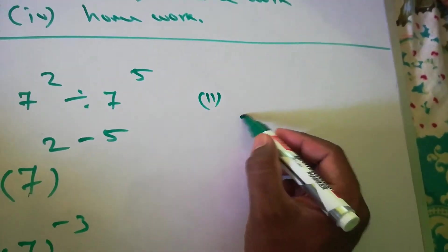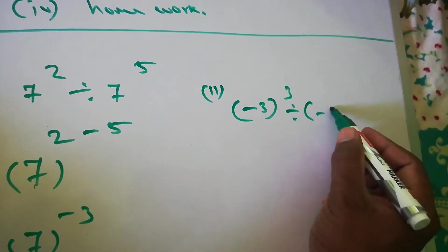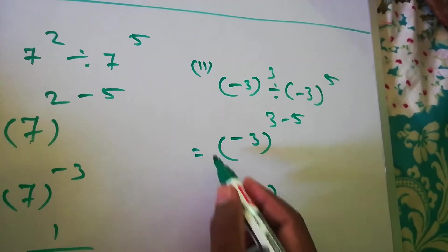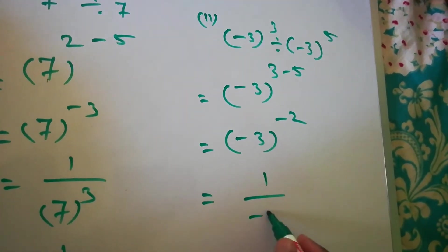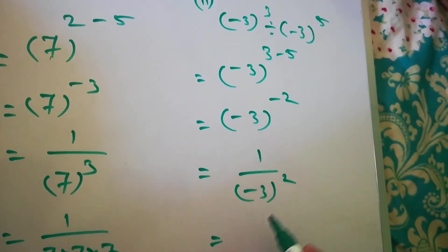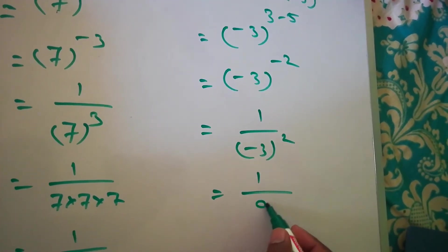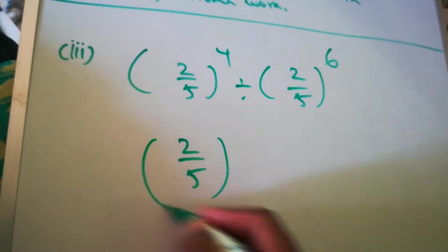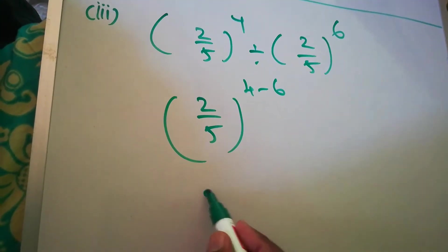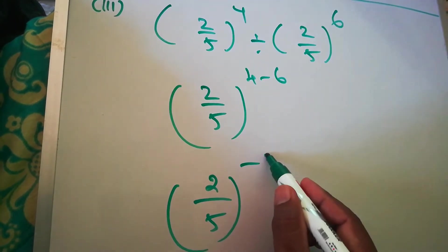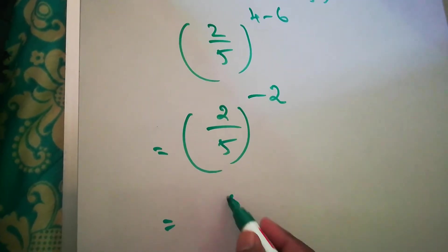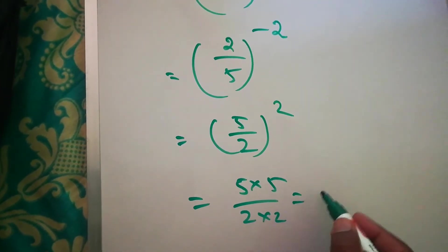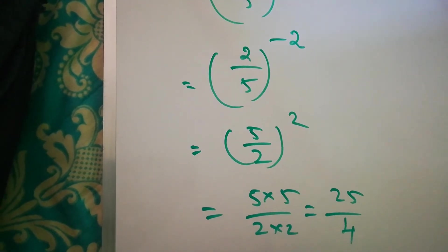Second question: (-3)^3 divided by (-3)^5 = (-3)^(3−5) = (-3)^(−2). A negative exponent means reciprocal: 1/(-3)^2. Minus times minus is plus, so (-3)^2 = 9, giving 1/9. Next: (2/5)^4 divided by (2/5)^6 = (2/5)^(4−6) = (2/5)^(−2). Negative exponent means take the reciprocal: (5/2)^2 = (5×5)/(2×2) = 25/4.